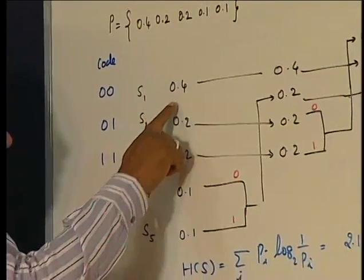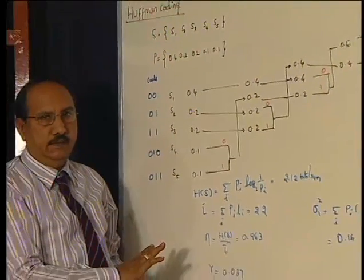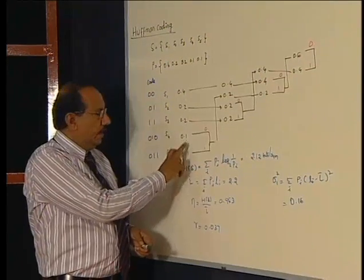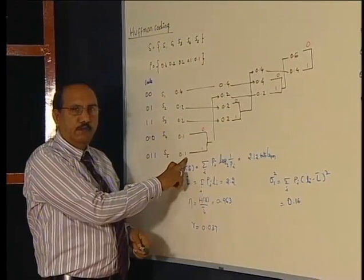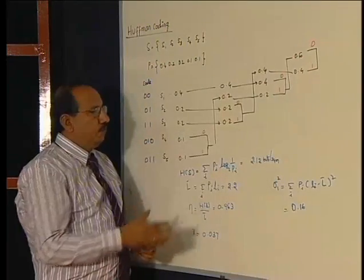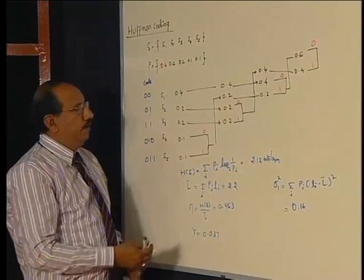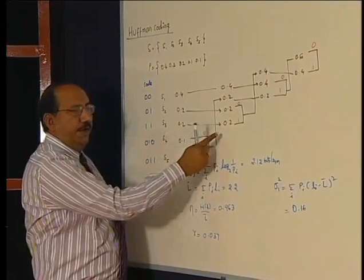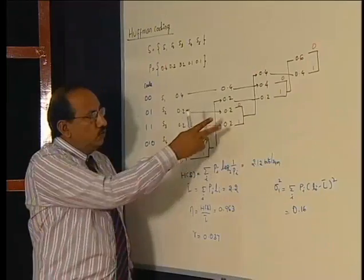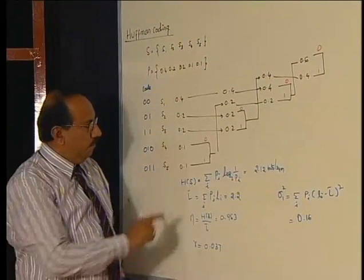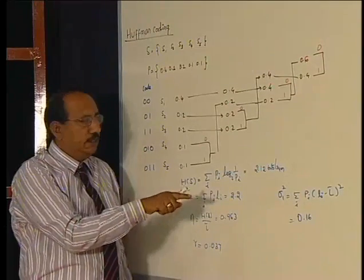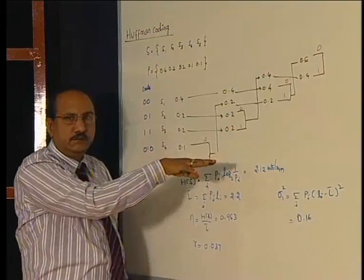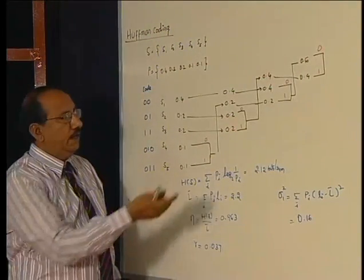So the order is 0.4, 0.2, 0.2, 0.1, 0.1. We add the probability of the last two symbols: 0.1 and 0.1. Now I proceed further, and here the confusion starts. In the next stage I have 0.4, 0.2, 0.2, and already there are two sources with 0.2 probability. Where do I keep this added probability — as high as possible or below these? I will explain the effect with this example.